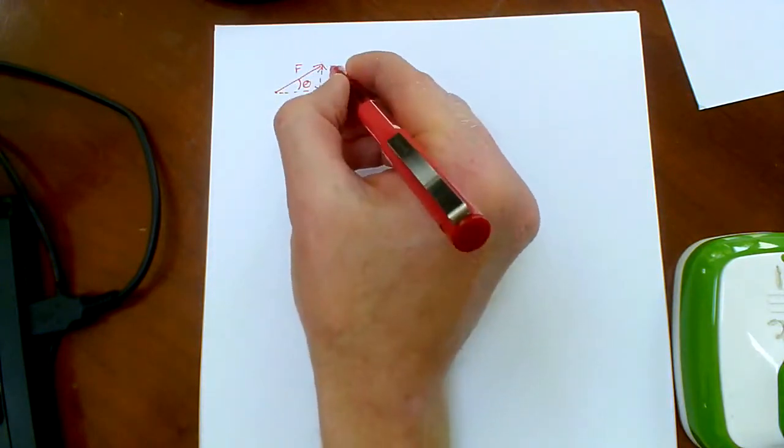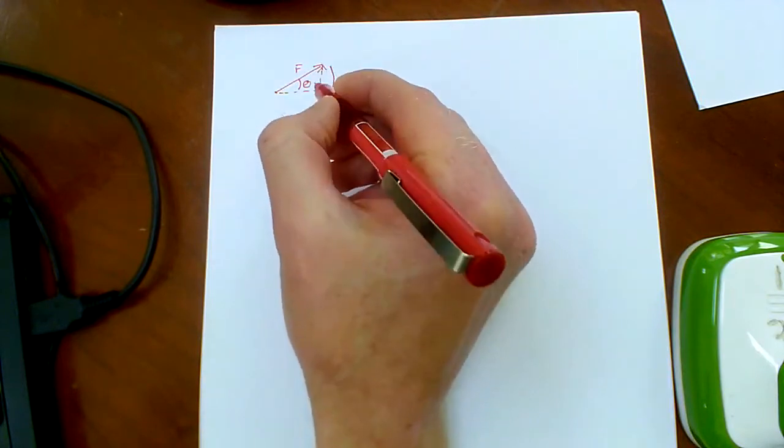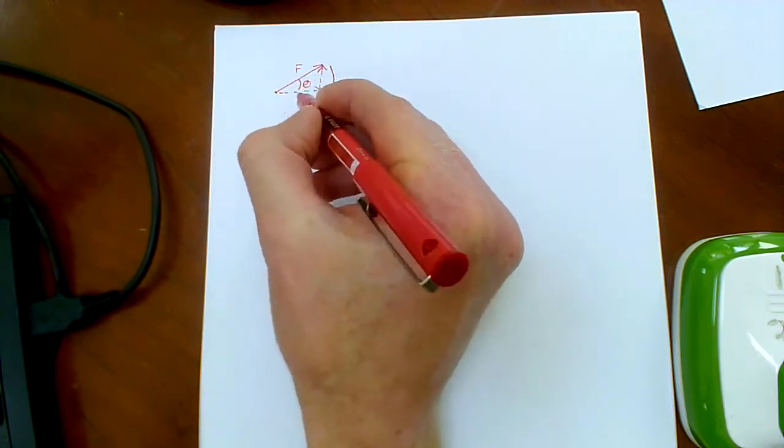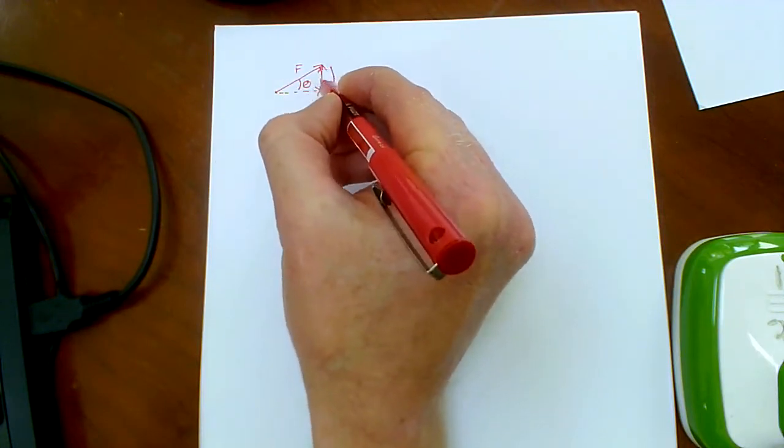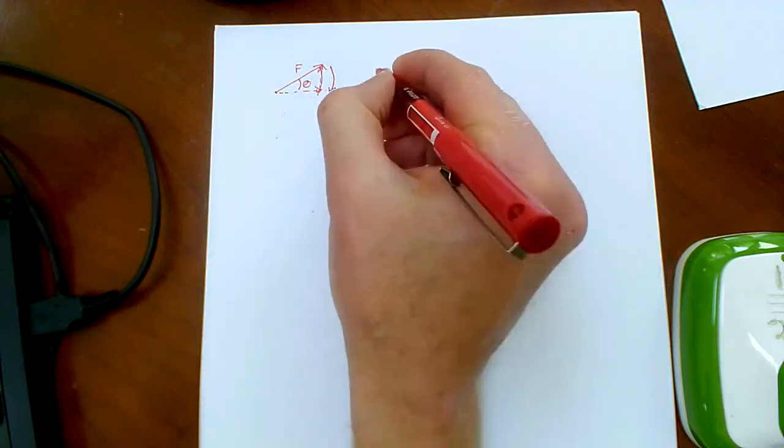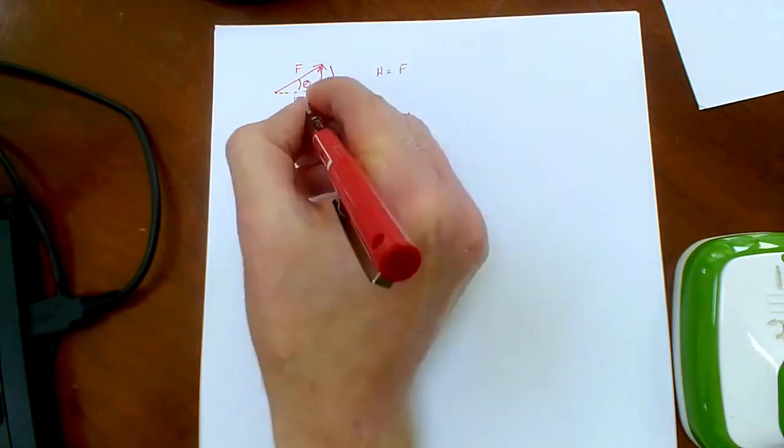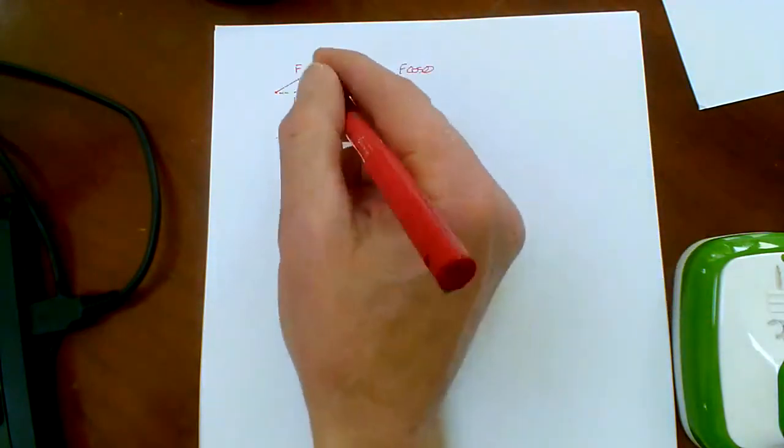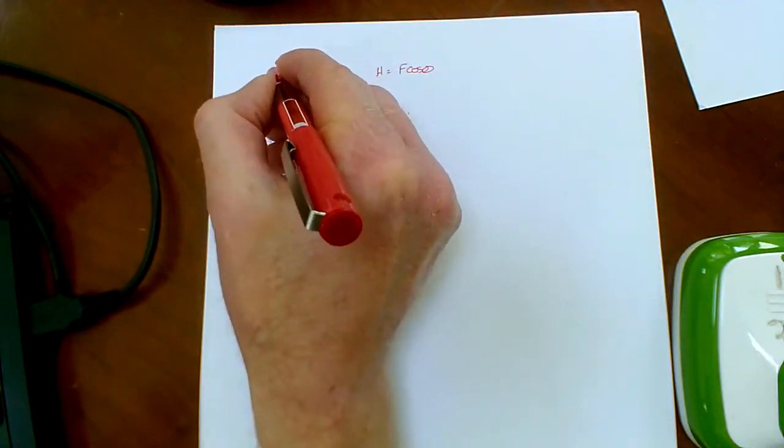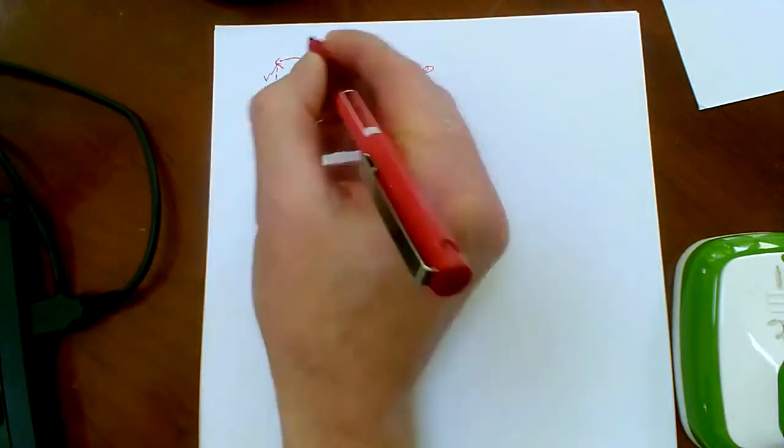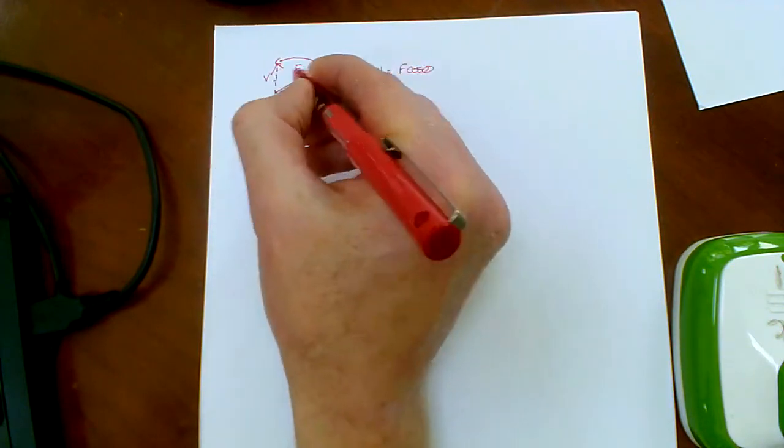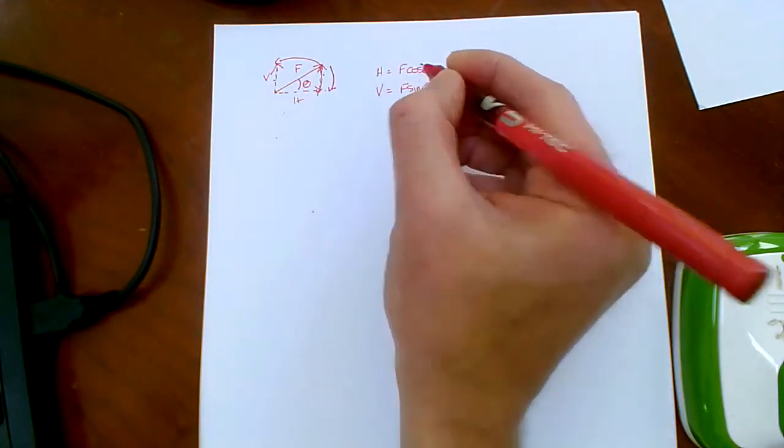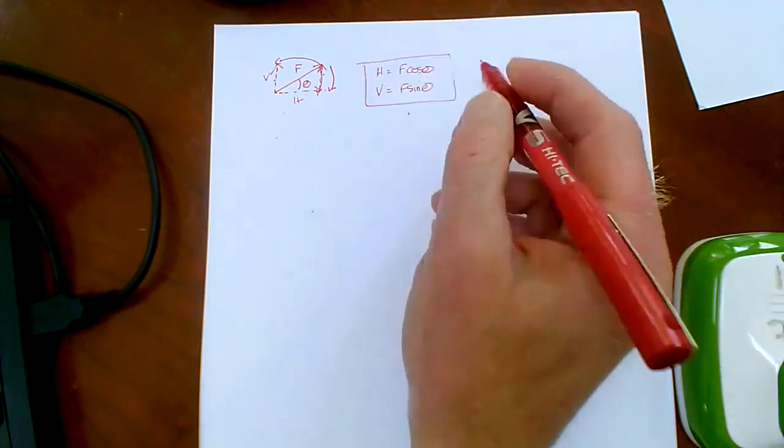If you imagine rotating through the angle to get to the component. So in order to get from here to the horizontal component, I'm rotating through the angle to get there. Then that component will be the cos component of F. If you rotate away from the angle to get the component, and of course this and this are the same, then it's the sine. Now that little rule always works.